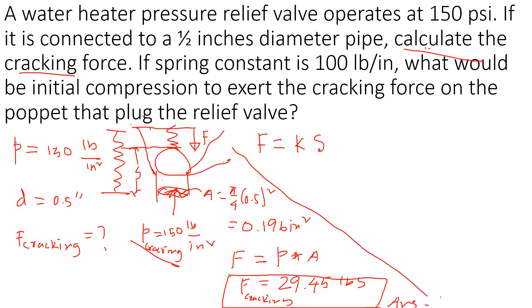Now it says that if the spring constant is given, then find the initial compression of this spring. We can use this equation: the cracking force which is 29.45 pounds is equal to k, k is given 100 pounds per inch, times δ. So δ equals this divided by 100. Pounds cancel, so the unit for δ would be inches. So initial compression is 0.2945 inches.